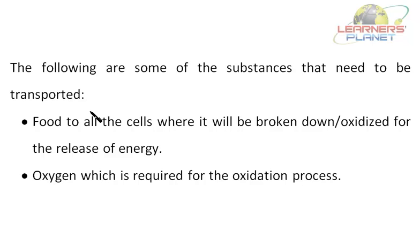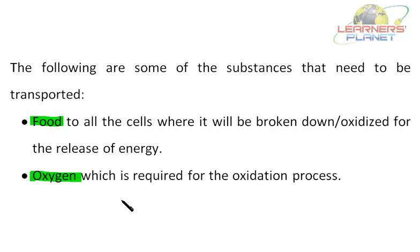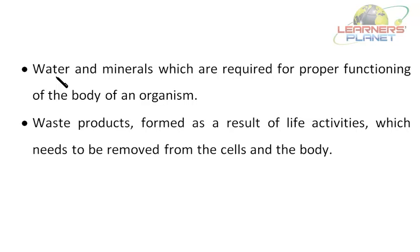The following are some of the substances that need to be transported. First is food — food is transported to all the cells where it will be broken down or oxidized for the release of energy. Food breaks down into smaller components for the release of energy. Second is oxygen, which is required for the oxidation process. Third is water and minerals, which are required for the proper functioning of the body of an organism.